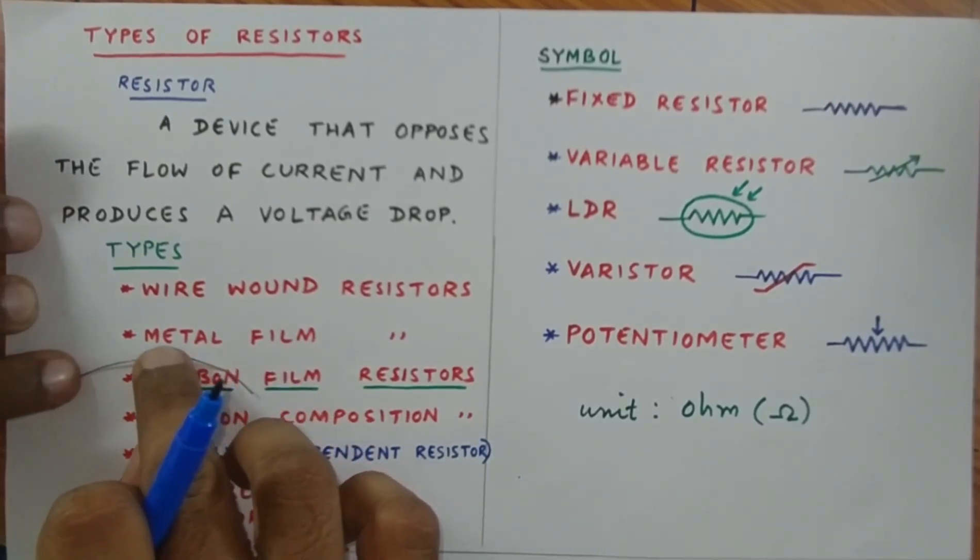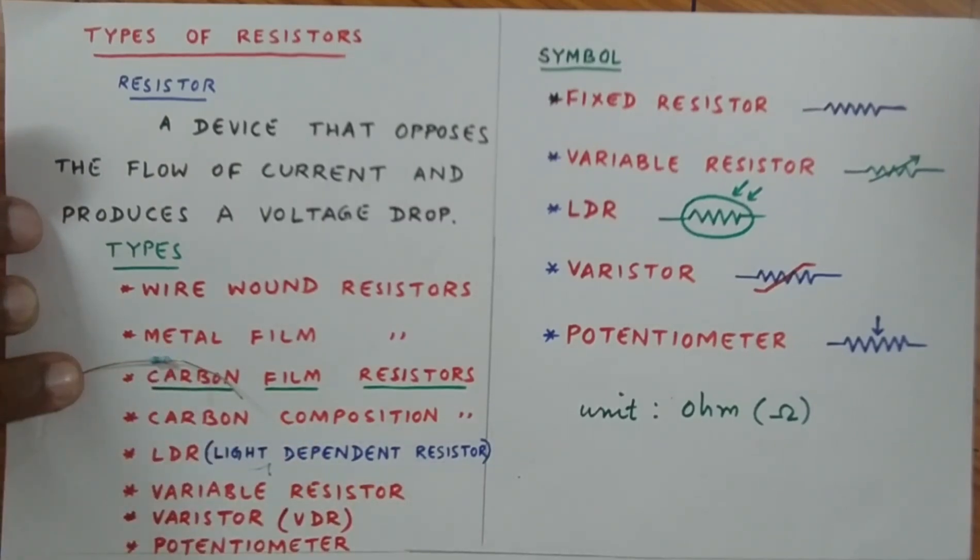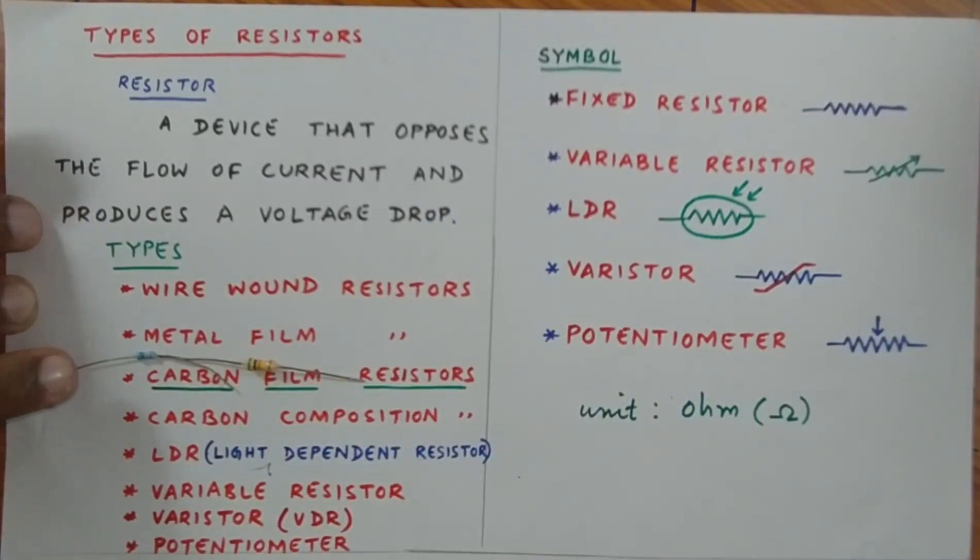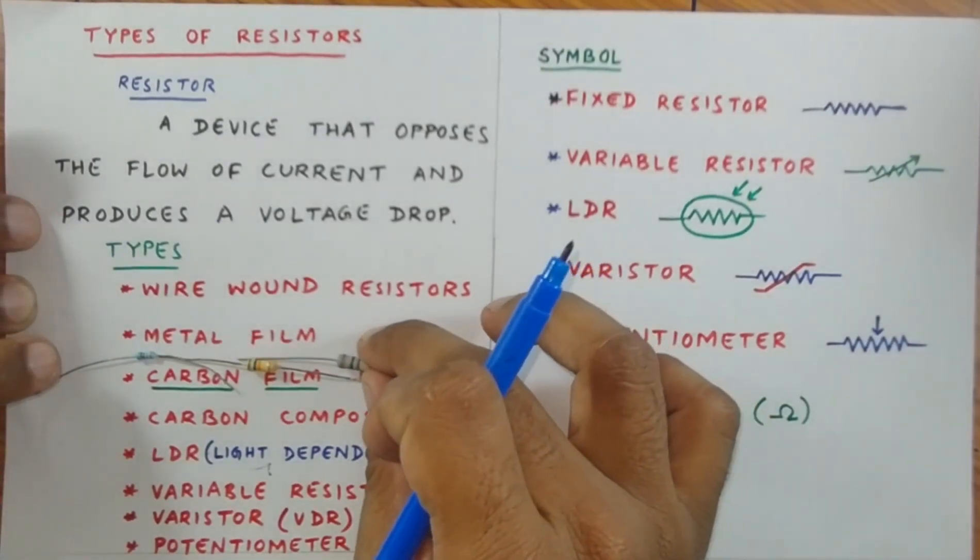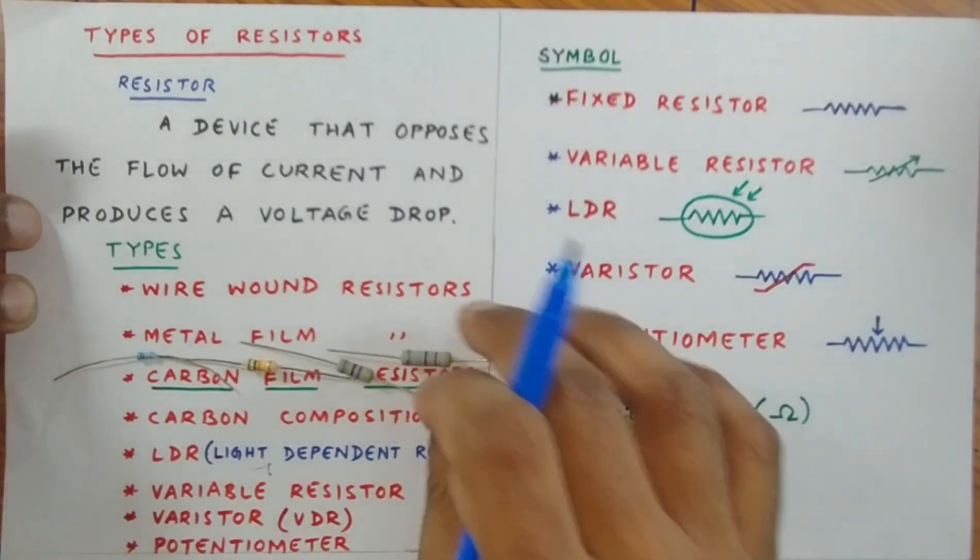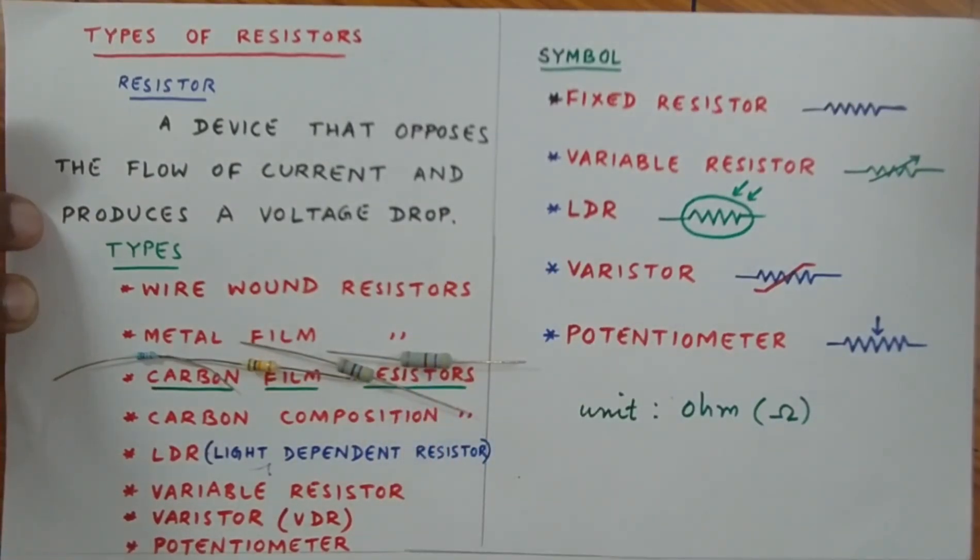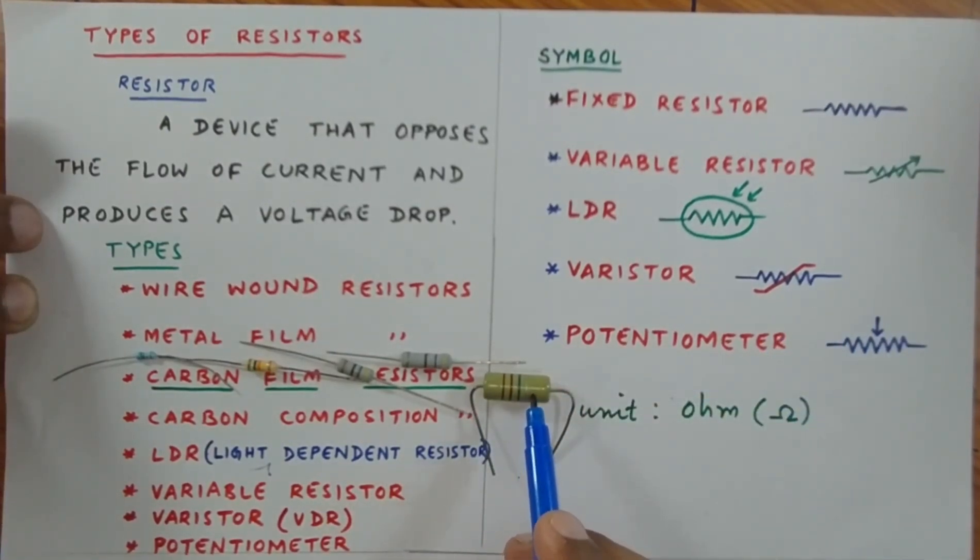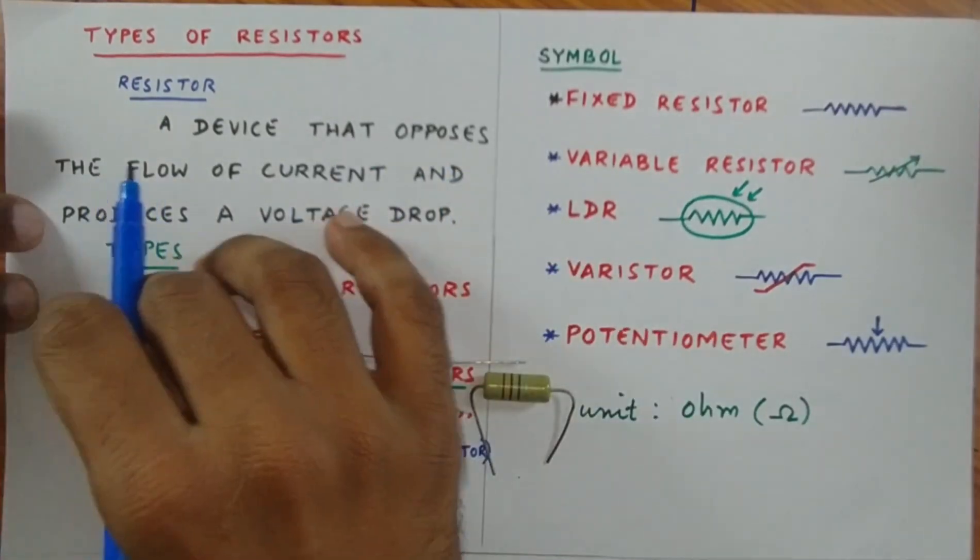This one is a half watt carbon resistor. This one is a one watt carbon resistor. This one is a two watt carbon resistor. And the final one, this carbon resistor, is of 3 watt rating. That's all about carbon film resistors.